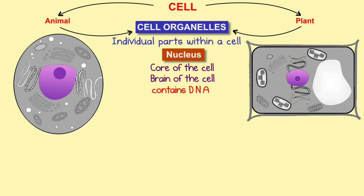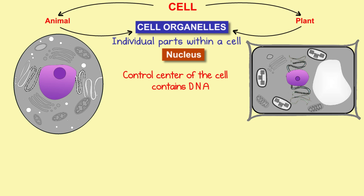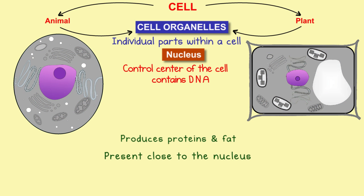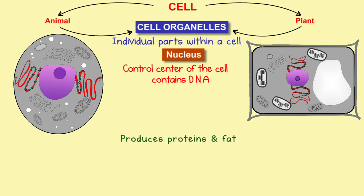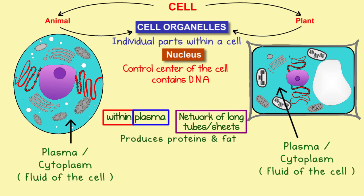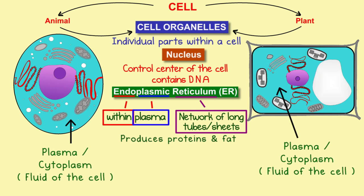The nucleus is the control center of the cell, but both the nucleus and the cell require proteins and fat for functioning. There is an organelle which produces these required proteins and fat, present close to the nucleus. It is so close that it emerges from the outer membrane of the nucleus and extends to form a large network of sheets and tubes within the plasma or fluid of the cell. Because of its location and structure, this organelle is named the endoplasmic reticulum.